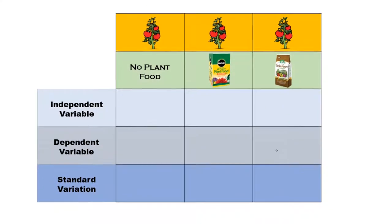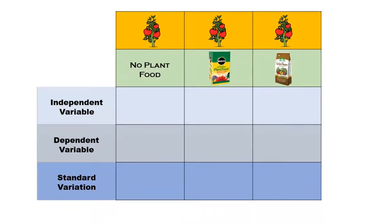Now let's talk about the scientific method a little more with another example. Say I'm interested in growing my own tomato plants and I want to get the best tomato yield I can. I'm going to have three different groups: one with no plant food, one with Miracle-Gro plant food, and one with just manure. My hypothesis is that if I use Miracle-Gro plant food, I will get a better tomato yield than if I use no plant food or manure.